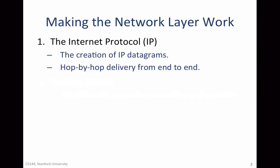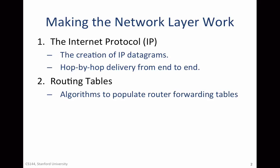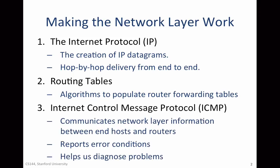There are three mechanisms that we use to make the network layer work on the Internet. The first is the Internet Protocol or IP, which creates IP datagrams and delivers them hop-by-hop from end to end. The second are the routing tables inside the routers — algorithms run to populate these forwarding tables so routers know how to deliver packets hop-by-hop. The third mechanism, which is the purpose of this video, is ICMP. It helps communicate information about the network layer between end hosts and routers, typically to report error conditions, diagnose problems, and figure out the path taken by packets.